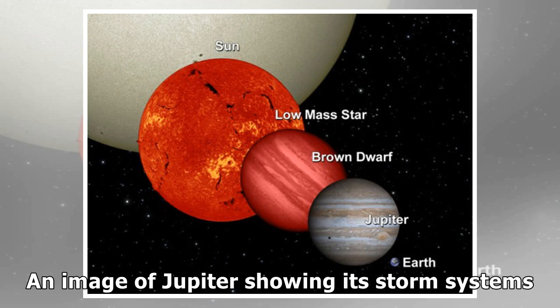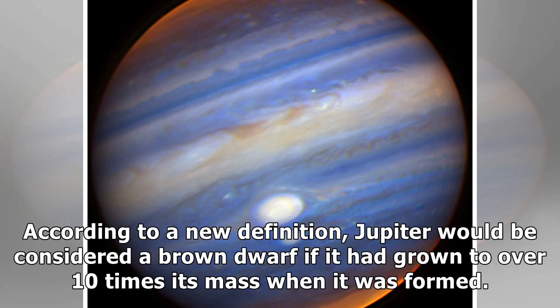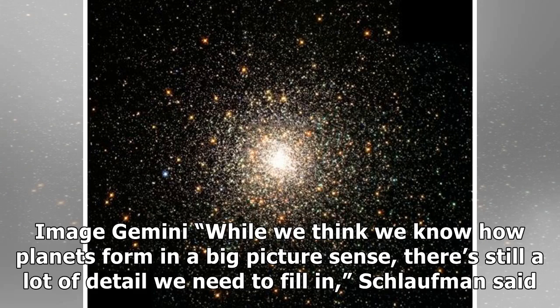An image of Jupiter showing its storm systems. According to the new definition, Jupiter would be considered a brown dwarf if it had grown to over 10 times its mass when it was formed. While we think we know how planets form in a big picture sense, there's still a lot of detail we need to fill in, Schlauffman said.